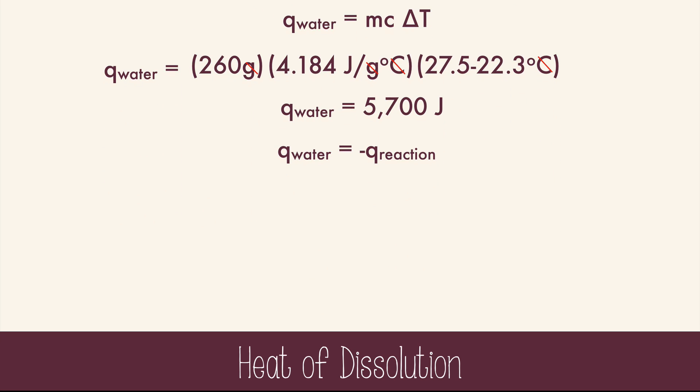Now we want to know the heat of dissolution in joules per mole. So what we have to do now is divide by the number of moles, and we get negative 17,000 joules per mole, or negative 17 kilojoules per mole. This chemical would make for a good hot pack because it's exothermic when the attractions between the molecules or atoms are broken. Other chemicals are endothermic and would make for good cold packs.